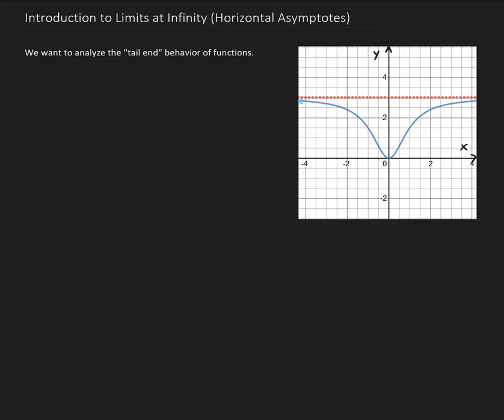To illustrate this, I'm going to define a function. Let f of x be equal to 3x squared all over x squared plus 1. We're going to construct two tables. In the first table, we're going to let x approach minus infinity, and in the second table, we're going to let x approach positive infinity.